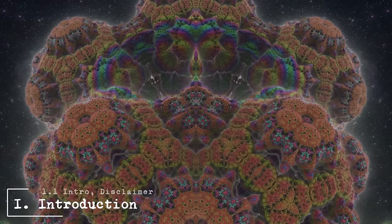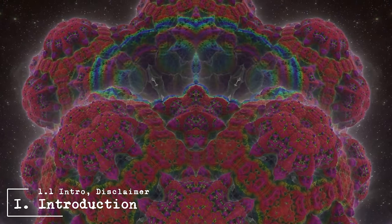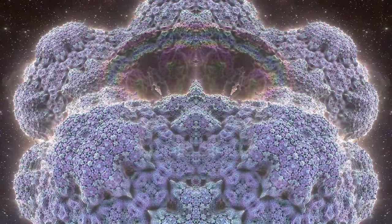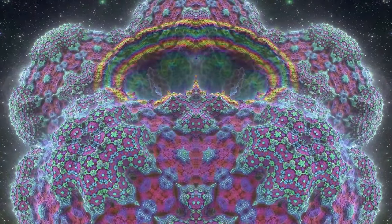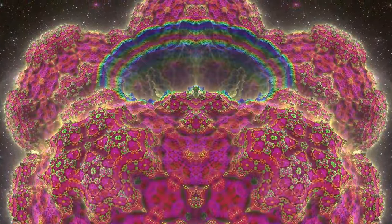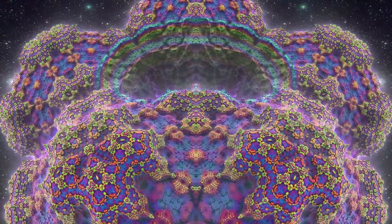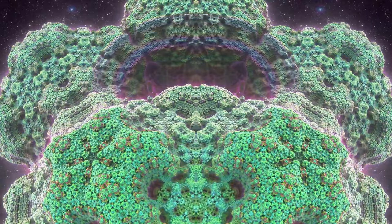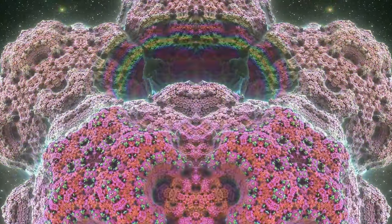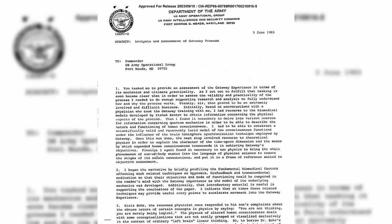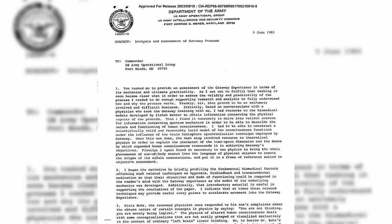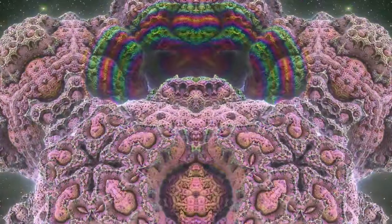We all know that government agencies can be somewhat shady at times. Through the years, countless declassified documents shed light on the CIA's interest in altered states of consciousness. Recently, I came across a declassified document from the year 1983 titled Analysis and Assessment of the Gateway Process. And let me tell you, it's something else. To give you an idea before we dive into it, let me outline the basic premise.